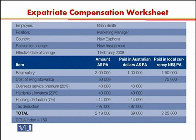The total amount of payment due to this person is $219,000, out of which $69,000 will be paid in Australian dollars and $225,000 in New Euphoria dollars per annum. This is a simple and basic expatriate compensation worksheet in which the person can easily see how much salary and benefits he will receive and what the total compensation package amounts to.